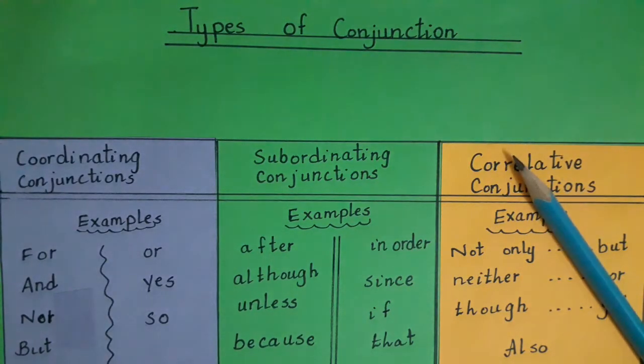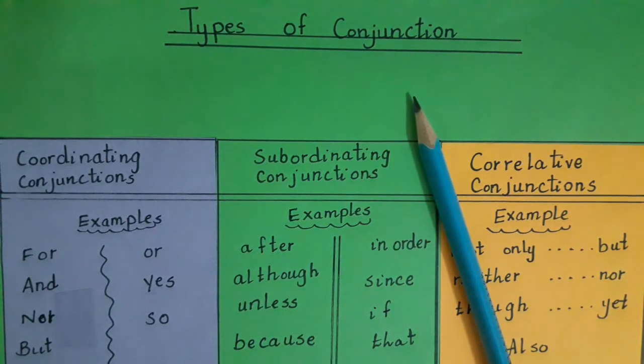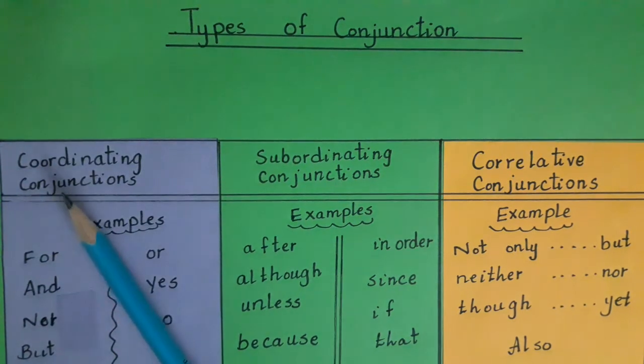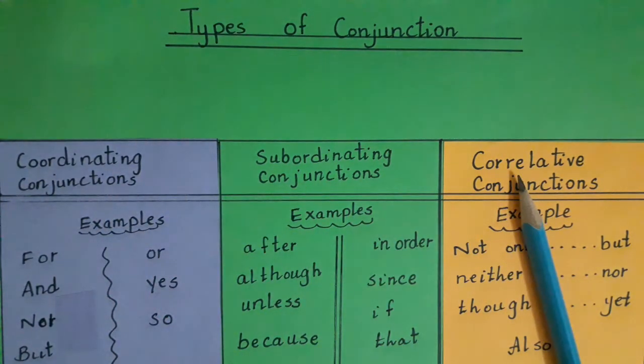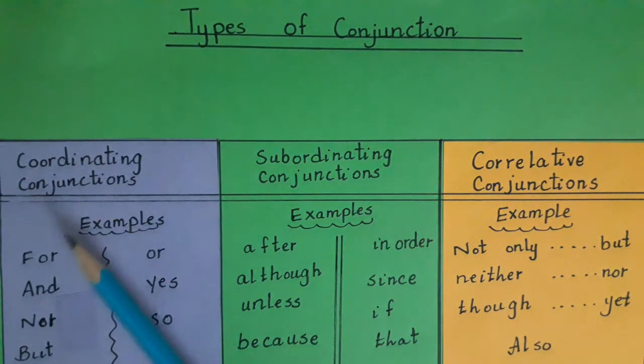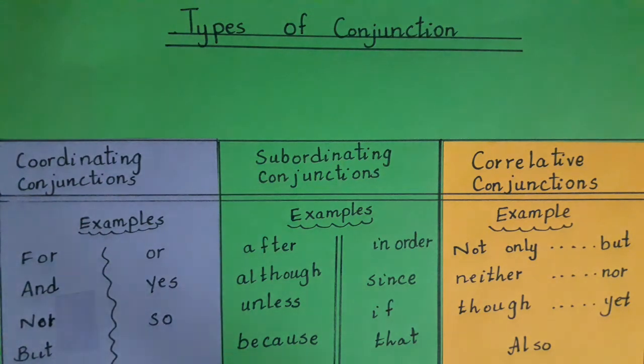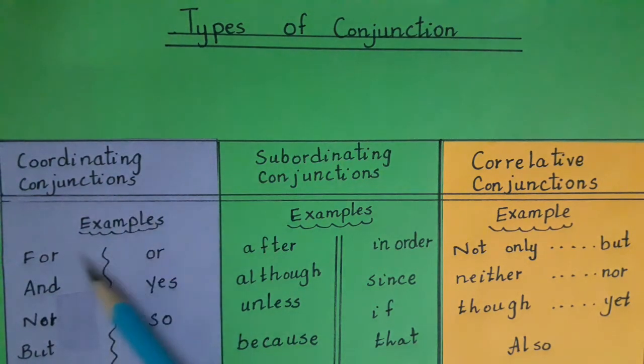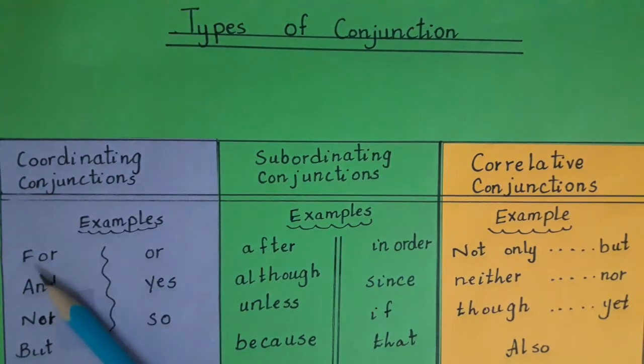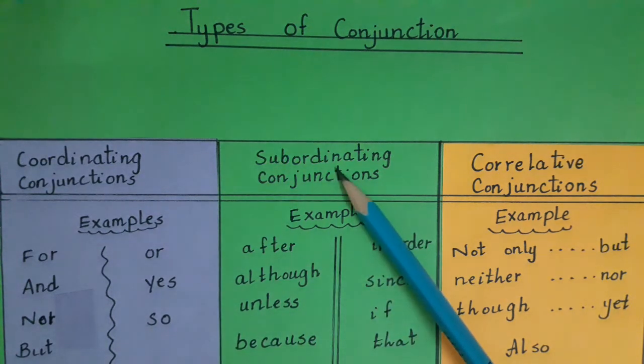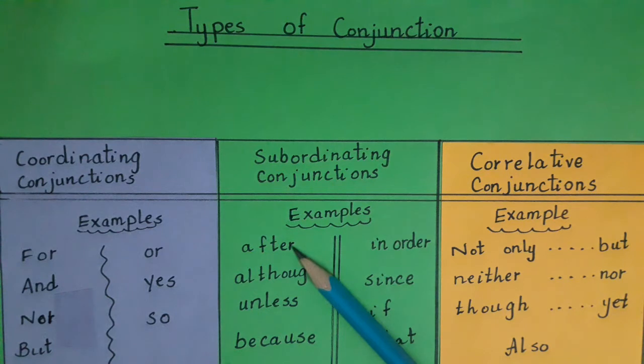Students, now we will talk about the types of conjunctions. There are three types of conjunctions: coordinating conjunctions, subordinating conjunctions, and correlative conjunctions. So what are coordinating conjunctions? Look at these examples: for, and, nor, but, or, yes, so.